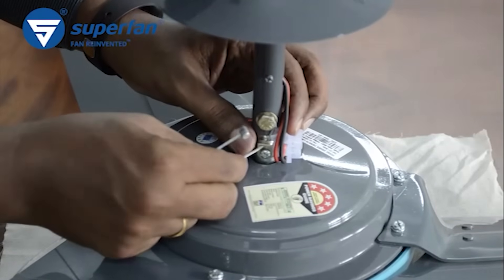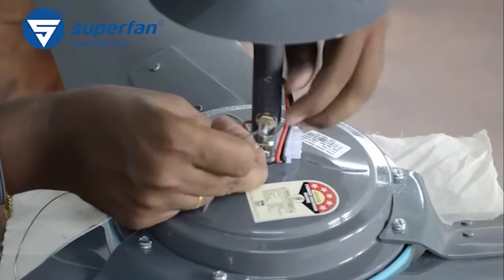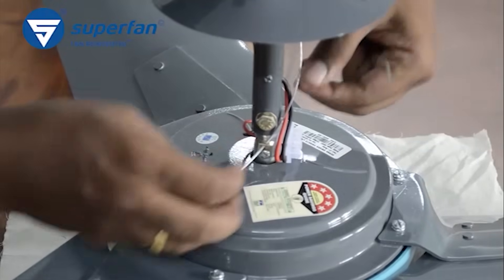Thread the unbeaded end of the safety rope through the support clip from bottom to top. Pull the safety rope until the beaded end fastens to the support clip.